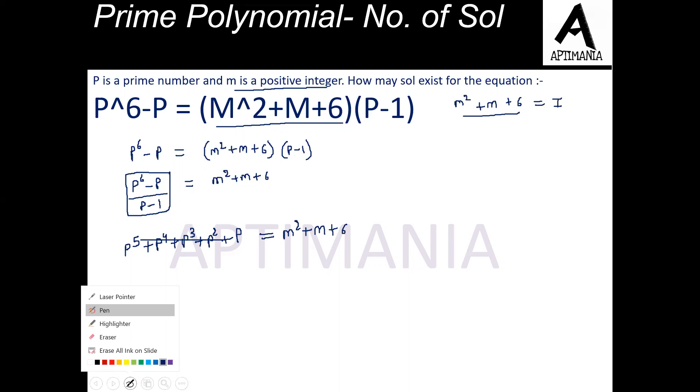Now we know that M is an integer. Now let us assume that M is odd. So square of odd will be odd. Number is odd. So odd and 6 is even. So the sum of these 3 will be even. When M is odd, the sum is coming out to be even.